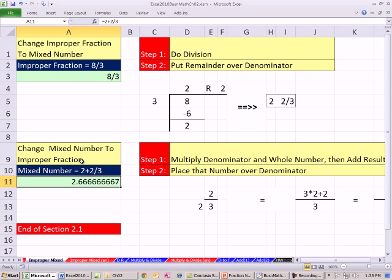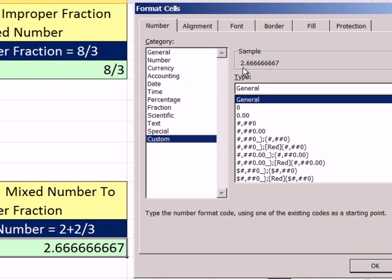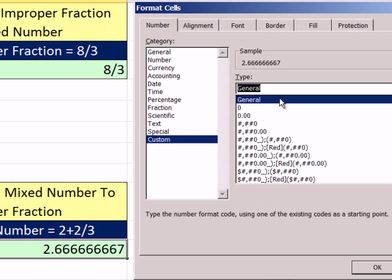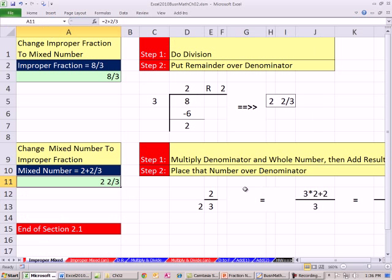Down here, since I want 2 and 2 thirds, I'm going to have to use a pound sign space, question mark, question mark. So Control-1. Come down to Custom, and I'm just going to build my own. Now one of the built-in ones will probably work just fine. Notice if you have just one of them, it's going to make it look different than it is. And then question mark slash question mark, because I want 2 and 2 thirds.